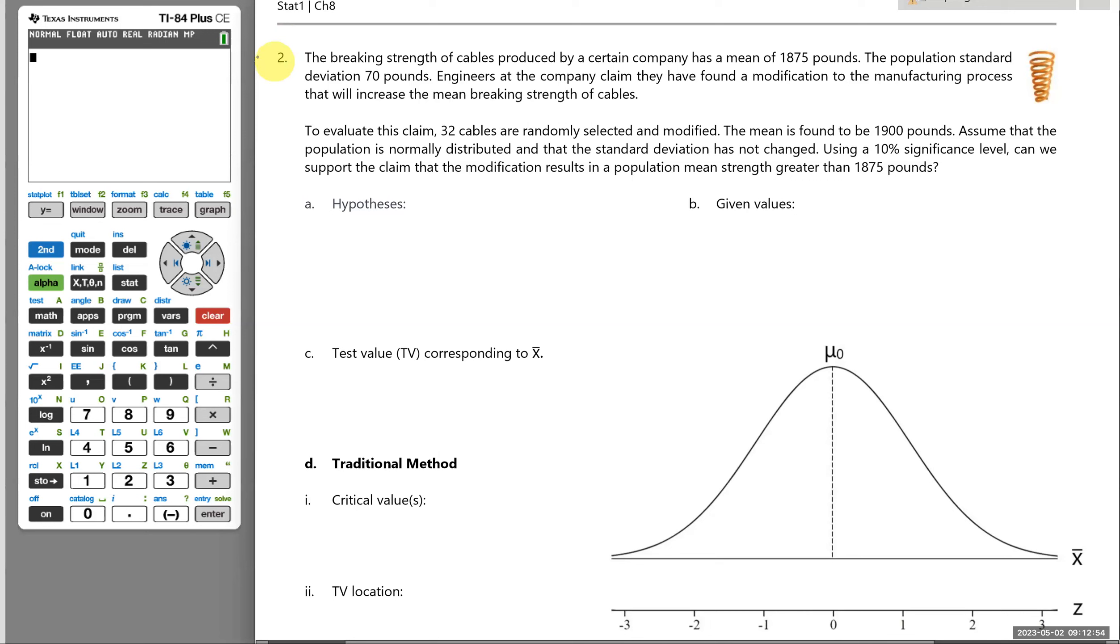We're ready to take a look at number two. The breaking strength of cables produced by a certain company has a mean of 1,875 pounds. The population standard deviation is 70 pounds. Engineers at the company claim they have found a modification to the manufacturing process that will increase the mean breaking strength of the cables.